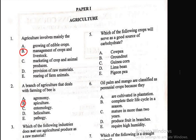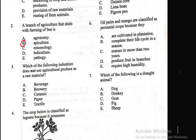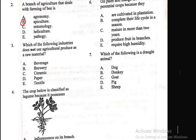Question 3: Which of the following industries does not use agricultural produce as a raw material? A) beverage, B) brewery, C) ceramic, D) paper, E) textile. Among the options, it is only the ceramic industry that does not use agricultural produce as a raw material.